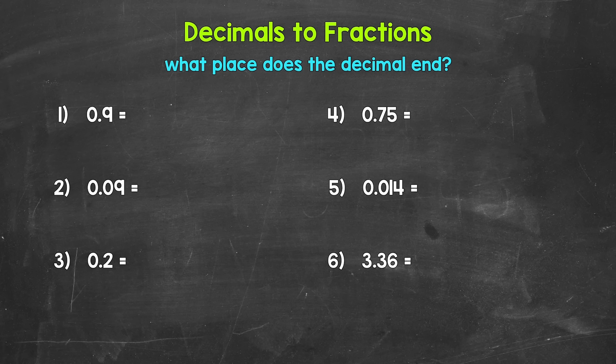And then whatever number we have on the right side of the decimal — the decimal digit or digits — will be the numerator. For example, number one, we have a nine, that's going to be our numerator. That decimal ends in the tenths place, so our denominator is going to be 10. So 9 over 10, nine tenths.